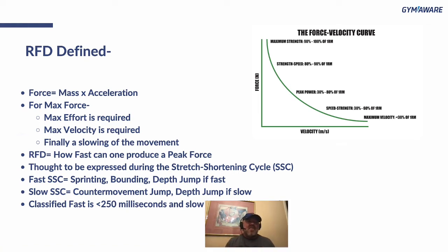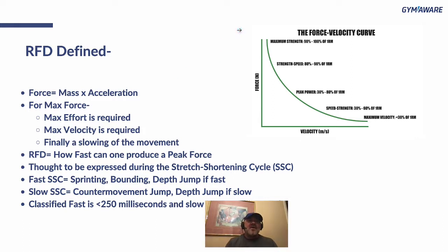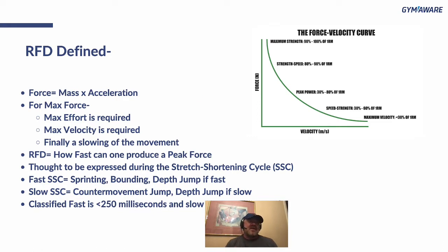RFD equals how fast one can produce a peak force. It's great to produce force, but for athletes — football players, softball players, sprinters — you've got to be able to produce maximum force as quickly as possible. Those are the people we watch on Sundays in the NFL or NBA. RFD is thought to be expressed during the stretch-shortening cycle, like when the foot hits the ground and how quickly the Achilles absorbs that force and transfers it. A fast SSC would be something like sprinting or a depth jump if you're good at it.